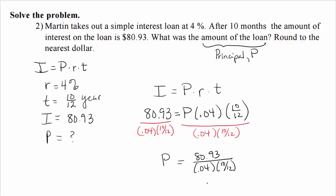The tricky part is plugging this into the calculator correctly. 80.93 is being divided by the entire quantity 0.04 × 10/12. I'll put 10/12 in parentheses. While not strictly necessary here, this habit helps avoid errors in other problems.